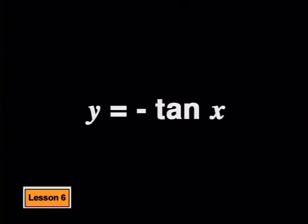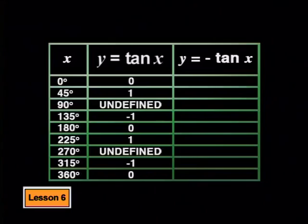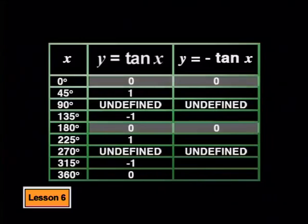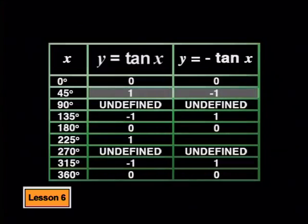So far we've only looked at a values greater than 0 for the tan graph. What effect do you think negative a values will have? Let's start with the graph of y equal to negative tan x. We can use the table to find values for negative tan x. The equation is the same as the parent graph but with a negative in front, meaning all y values are the same but with opposite signs. The undefined values remain undefined, the zeros remain zeros, the negative ones become positive ones, and the positive ones become negative ones.